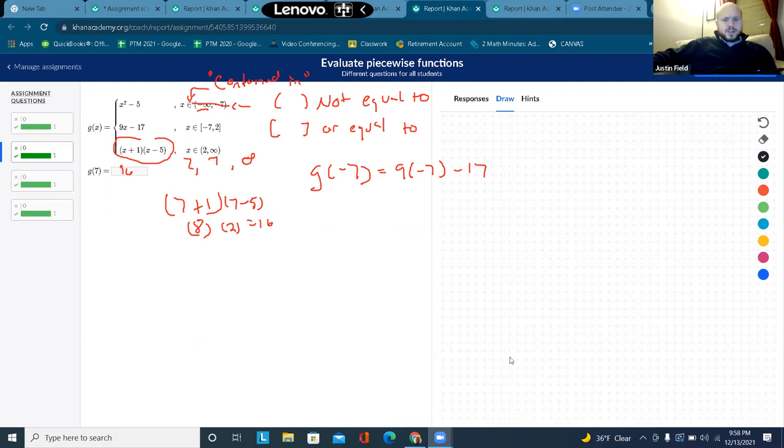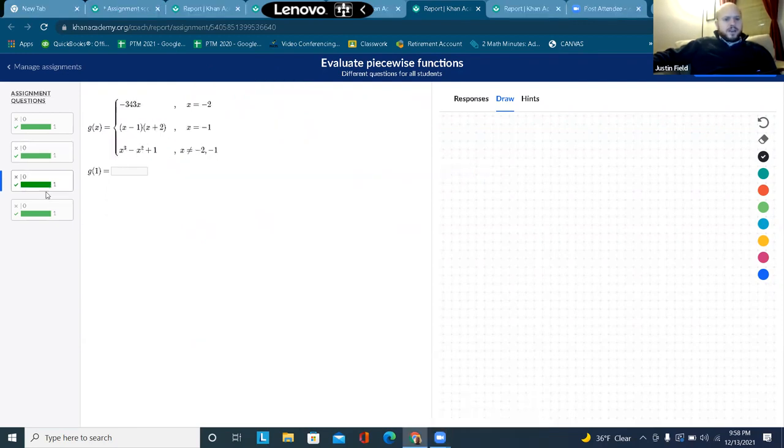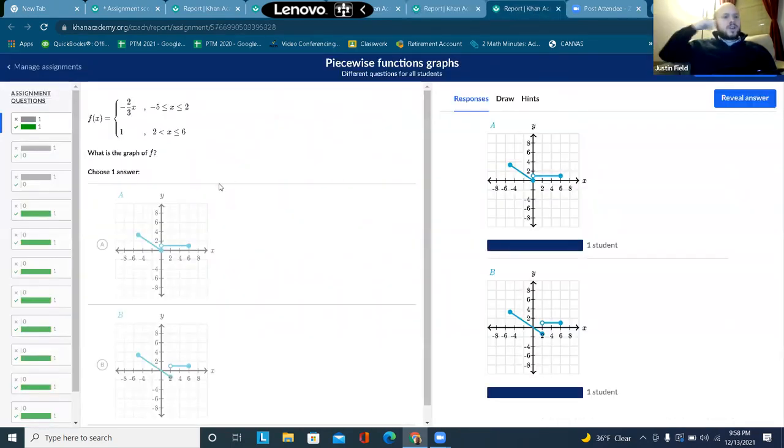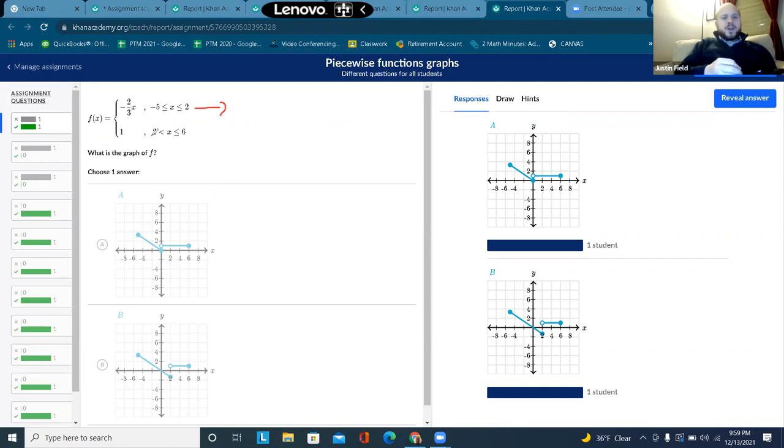Piecewise functions. They're here to stay. And so here's a graph of a piecewise function. So in order to graph it, we're just going to need to graph each piece separately. So the way I do that would be I'm going to make a table using the endpoints. And then if you want to do a point in between, you can, if it's not a line graph. So this goes from negative 5 to 2.